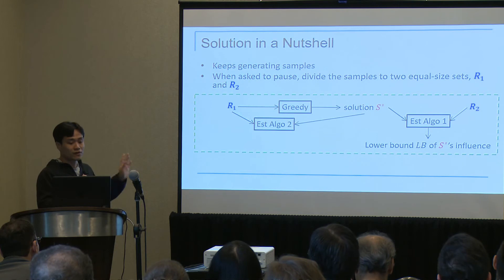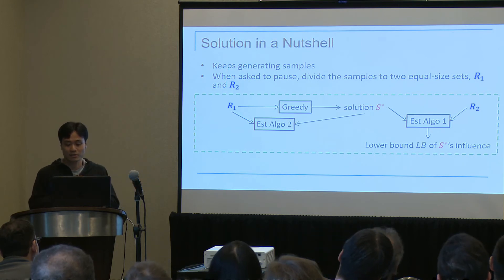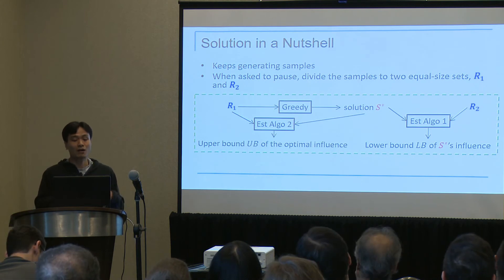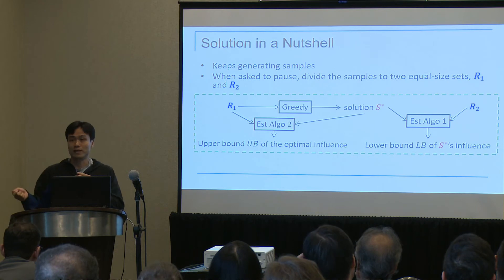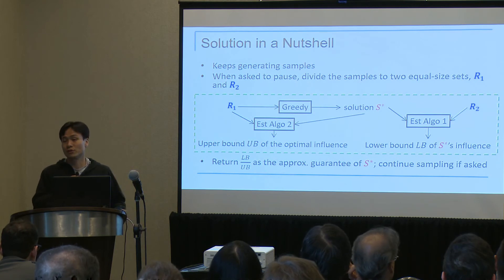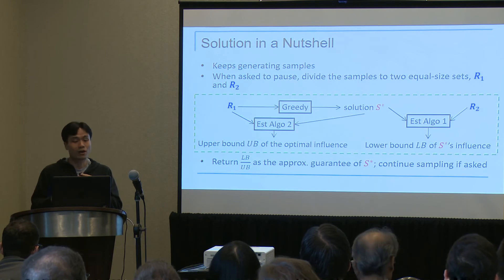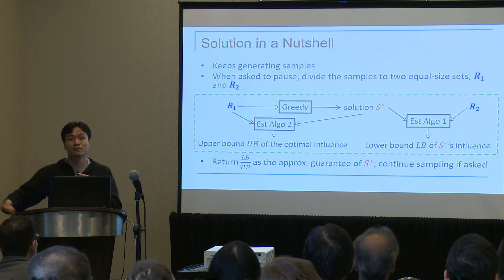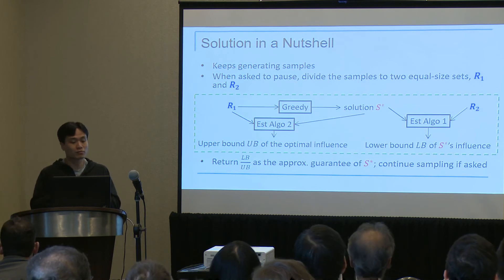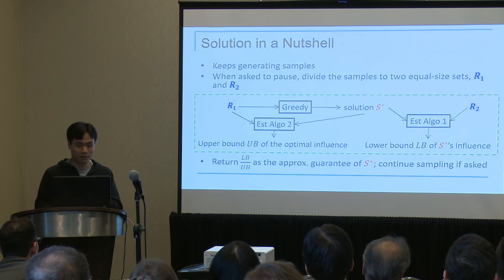Meanwhile, the first subset R1 along with the solution is fed into another estimation algorithm to get an upper bound of the optimal influence — the expected influence of the optimal K-node set. The ratio of these two bounds is taken as the approximation guarantee of the solution and returned to the user. If the user is satisfied, we stop. Otherwise, we continue to generate more samples, which lead to a more accurate solution and better approximation guarantees.